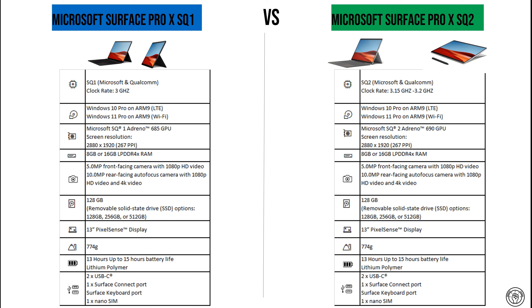For the operating systems, they both come with either Windows 10 Pro on ARM or Windows 11 Pro on ARM, with two different connectivity technologies: LTE and Wi-Fi.